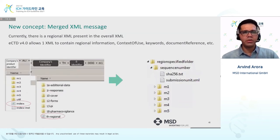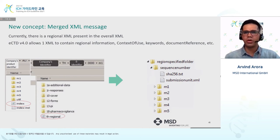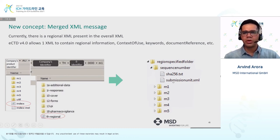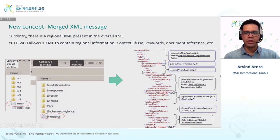Another new concept is the merged XML. In the current version there are two XMLs — an index XML governed by ICH and a regional XML. In version 4.0, only one XML is used to contain everything: regional information, context of use, document references, and keywords. This is easier to manage since everything is governed through one single file. The new structure has an application-level folder, a sequence number, and one XML covering modules 1 through 5 — with no separate utility folder and no separate regional XML under module 1.